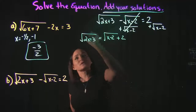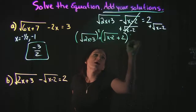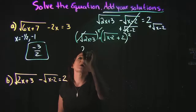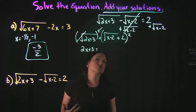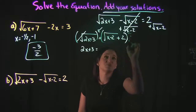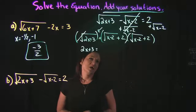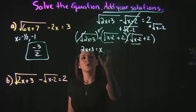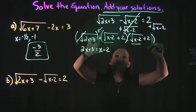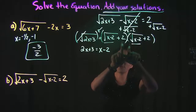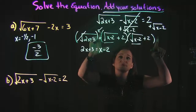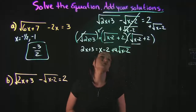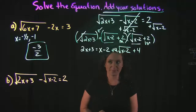Now that I have a radical on either side I'm going to square both sides. On the left the radical and square cancel, leaving 2x plus 3. On the right we square the entire expression (√(x−2) + 2) using FOIL: first gives x minus 2, outside gives 2√(x−2), inside gives another 2√(x−2) — combining those gives 4√(x−2) — and last gives 4.